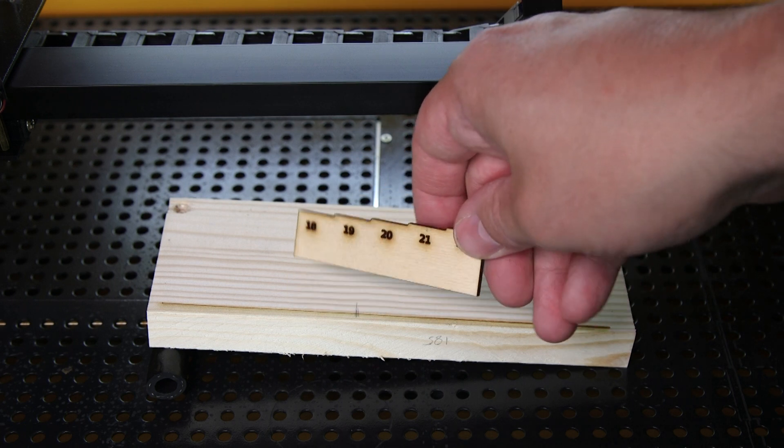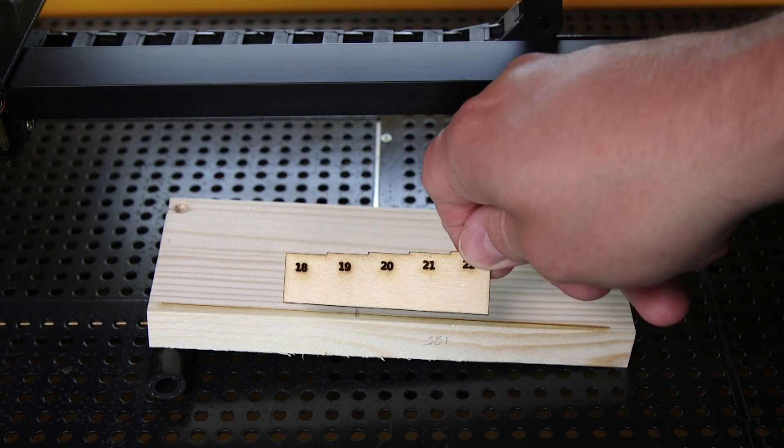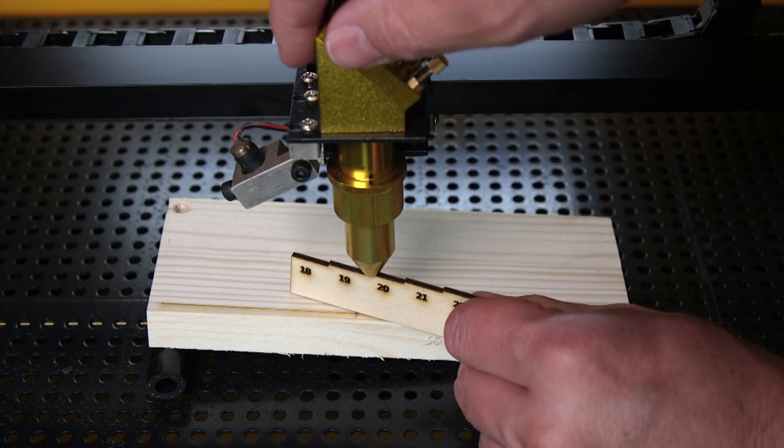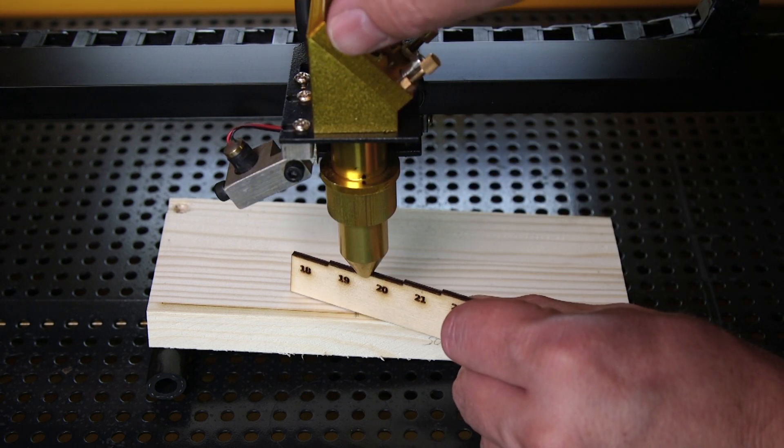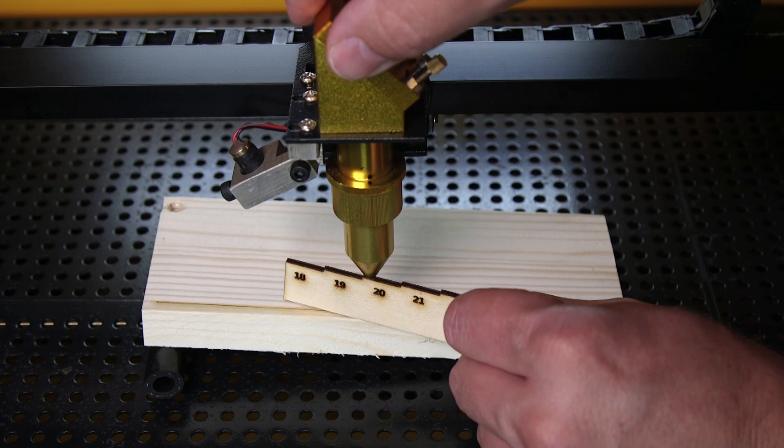One easy way to set up your focus length is to make yourself a little feeler gauge like I've done here. I can simply run this between my material and my laser head and get the correct focus length.